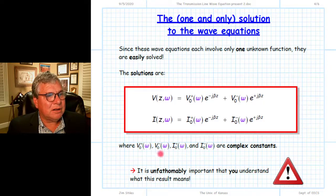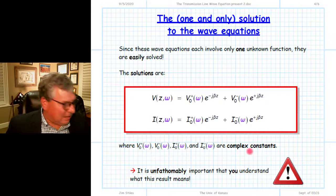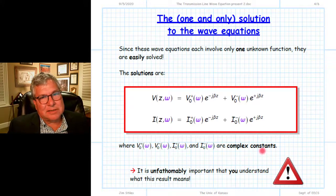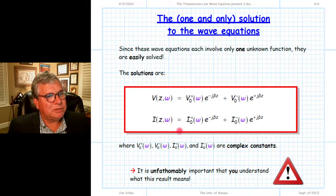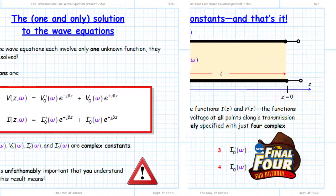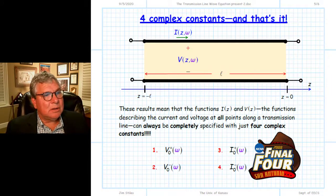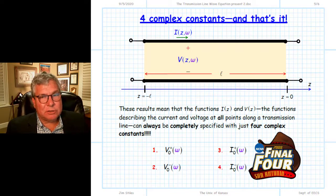So what does this mean? The solutions from the previous page have these forms. Where are the variables? Where can we account for the richness in the different solutions for current and voltage along the transmission line? They are all encompassed in these four complex numbers.